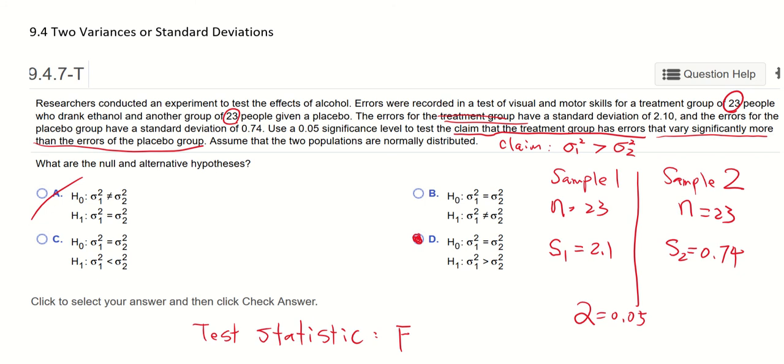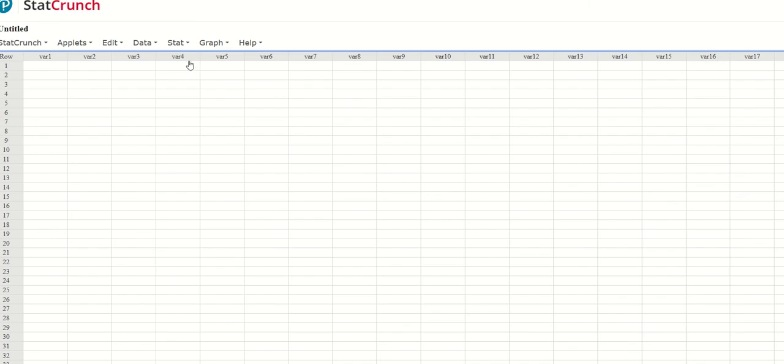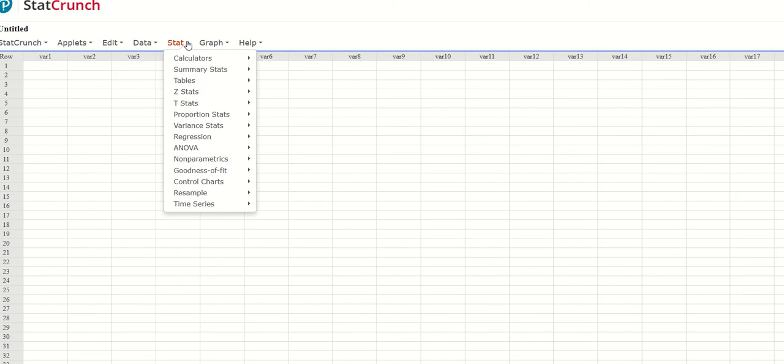This could be found using StatCrunch. So here's StatCrunch, we'll go under Stat and since we're comparing two variances go to Variance Stats, and we're comparing two samples not one sample but two samples. And we got summary here. When you're given data press with data but here we're given summary so press with summary.